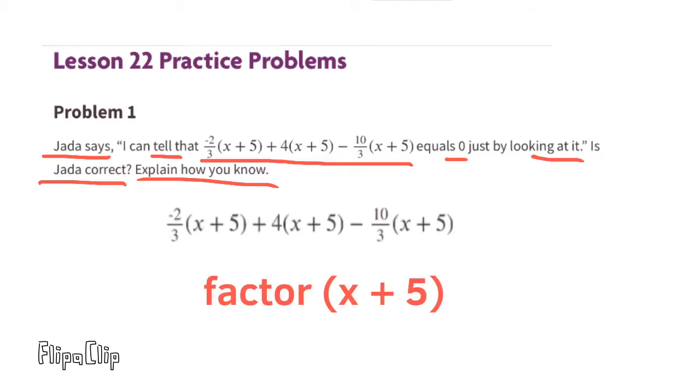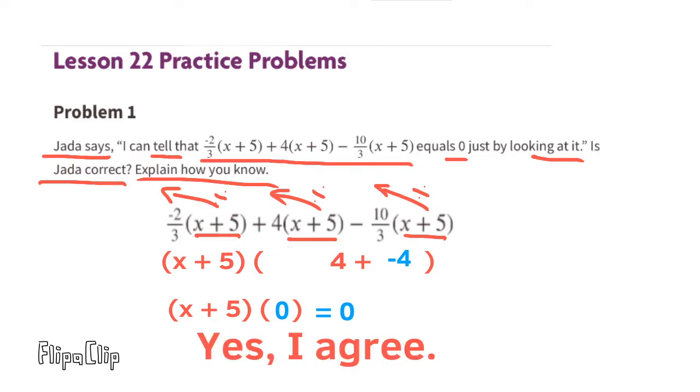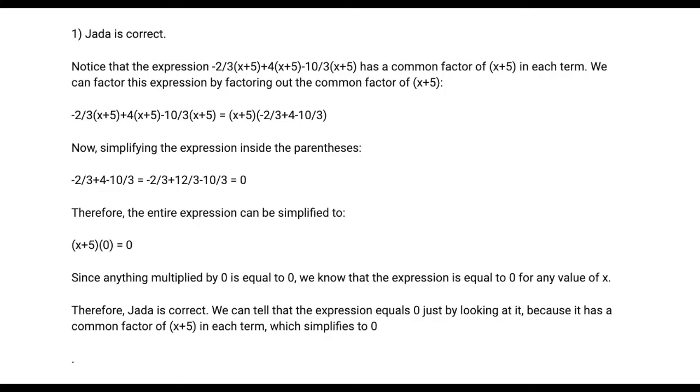First, factor x plus 5. Place x plus 5 on the outside and multiply it by negative 2 thirds, positive 4, and negative 10 thirds. We can combine these like terms. Negative 2 thirds and negative 10 thirds is negative 12 thirds. And negative 12 thirds is equivalent to negative 12 divided by 3, which is negative 4. Now inside this parenthesis, we're left with 4 plus negative 4, which is the same as 4 minus 4, which equals 0. Any value times 0 equals 0.